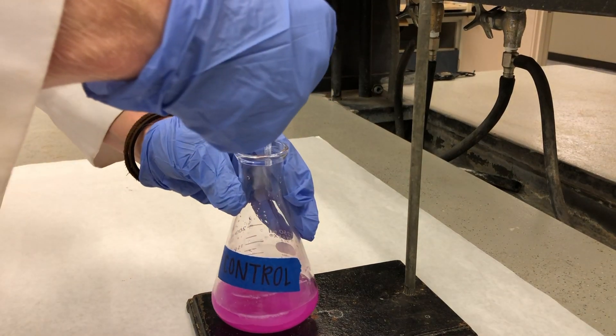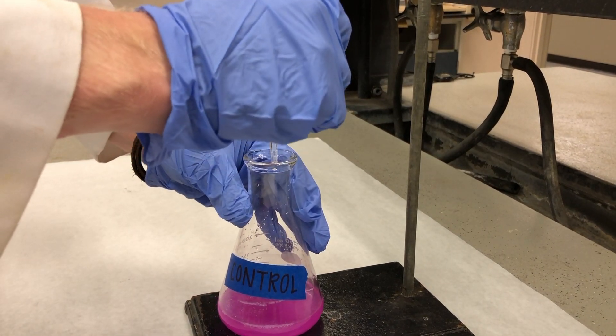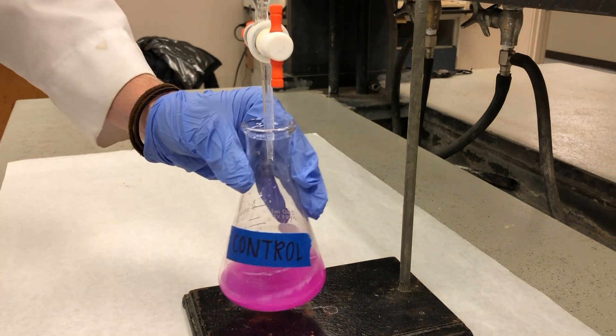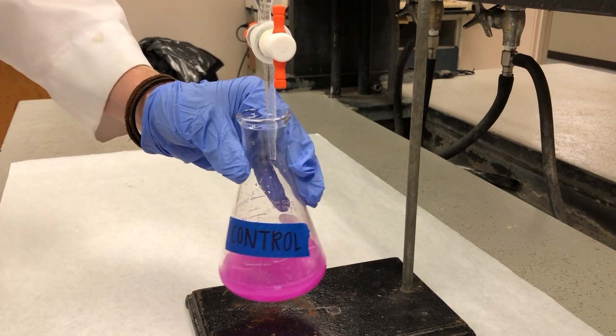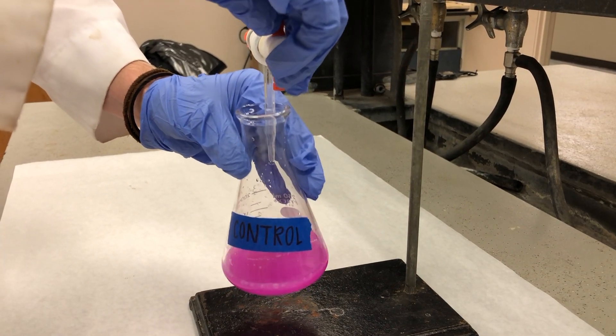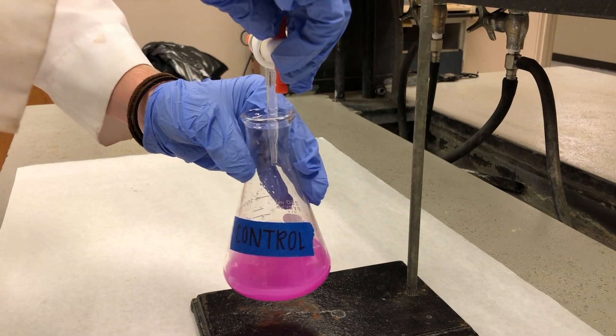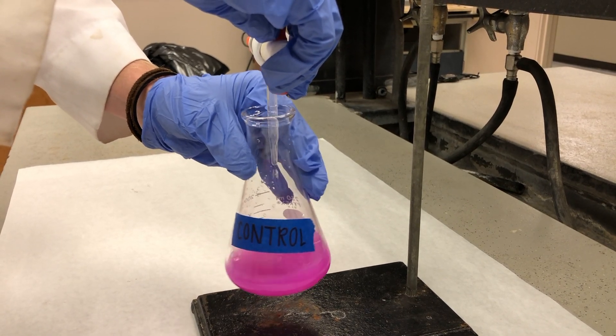Carefully position one of the flasks under the burette opening. Record the initial volume of hydrochloric acid in the burette and allow it to slowly drip into the flask. Swirl the contents of the flask as the hydrochloric acid is added.